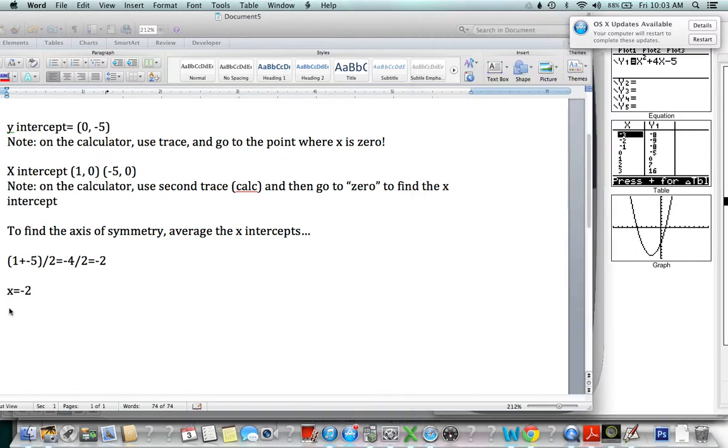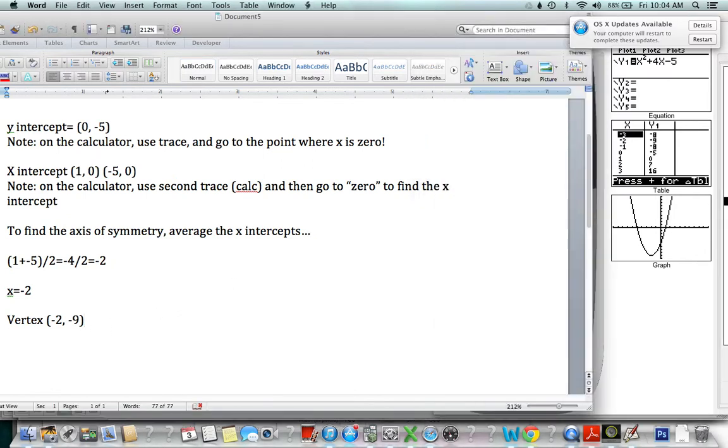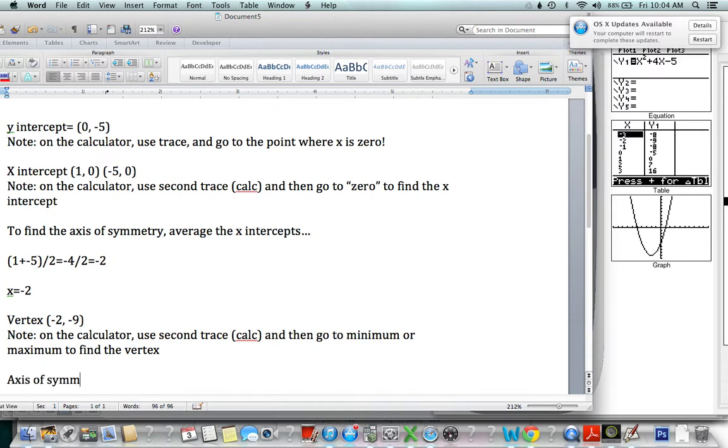Let's write down what we know here. First the vertex. The vertex is negative two comma negative nine. Let's double check. Correct. Negative two comma negative nine. And we found that by, so it started off the same way. On the calculator, we use second calc. And then we went to minimum or maximum if it was upside down to find the vertex.